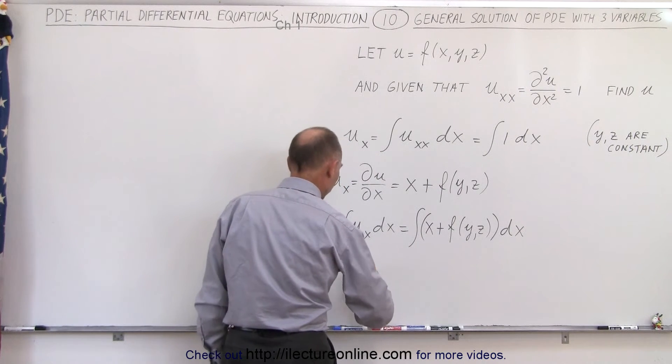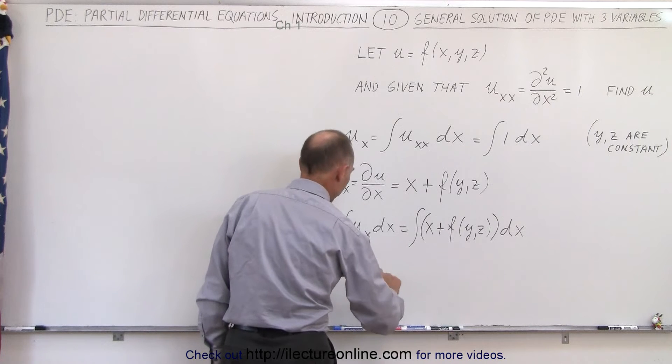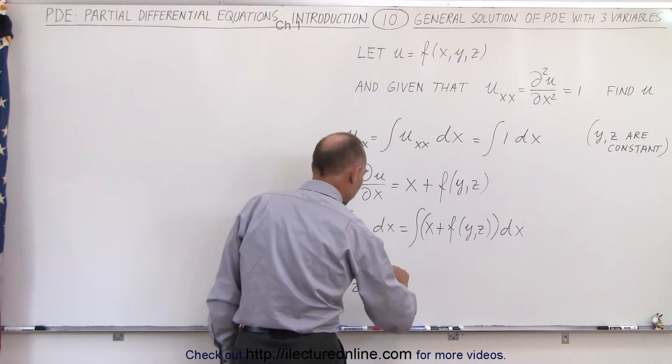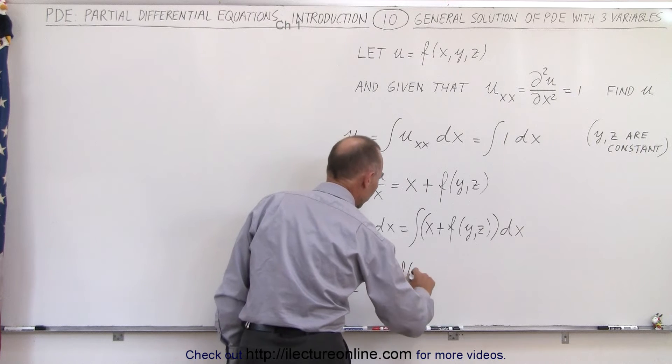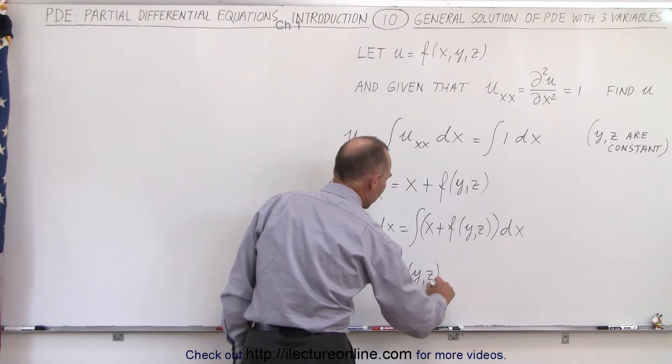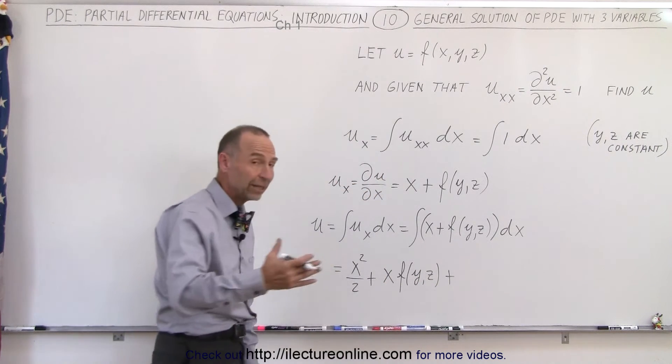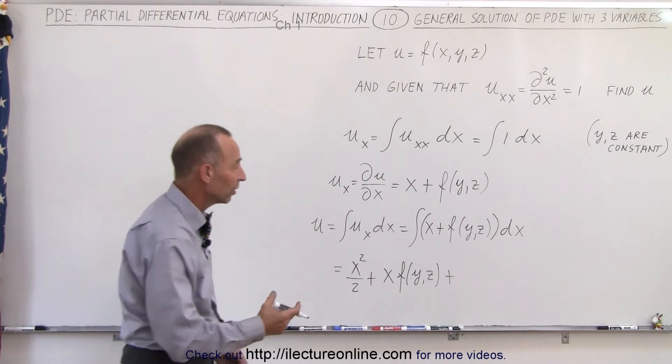So this is going to be equal to, integrate x, we get x squared over 2 plus, if this is a constant and we integrate it, we'll get x times the function of y and z, plus, again, since we're integrating, we have to add another function of y and z, so let's call that g of y and z.